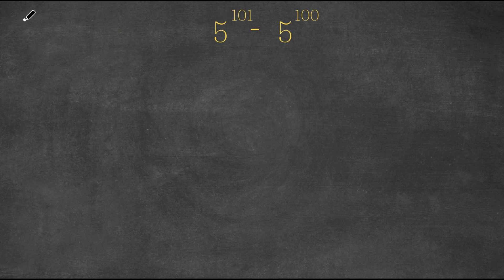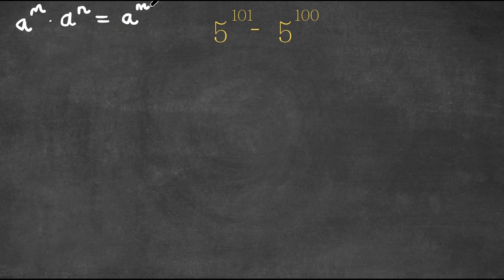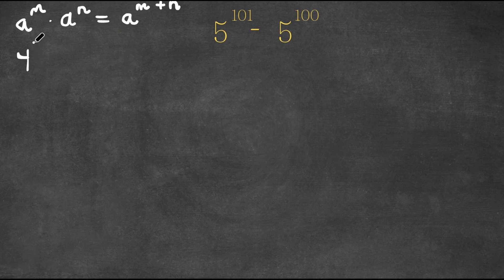Now, if we have something in the form a to the power of m times a to the power of n, then this is equal to a to the power of m plus n. And the same thing can be written vice versa — if we have a to the power of m plus n, this can be written as a to the power of m times a to the power of n. For example, 4 to the power of 3 can be written as 4 squared times 4 to the power of 1, because 2 plus 1 equals 3.